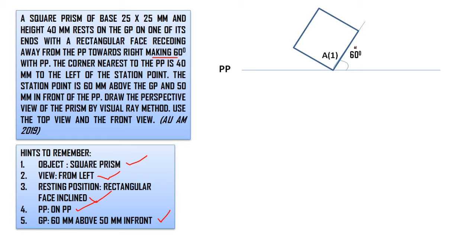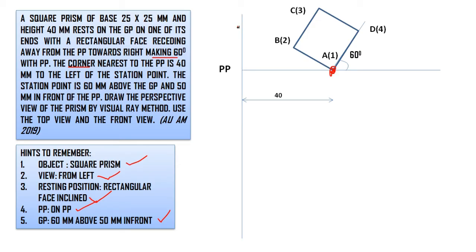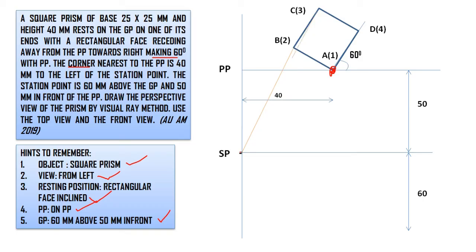Naming the corners: a1, b2, c3, and d4. Now the distance is 40mm to the left — this corner is nearest to the PP. Mark the corner that touches the PP. Draw a straight line and drop it. The station point is 50mm in front and 60mm above GP. Join station point line: b to a, then c to a.